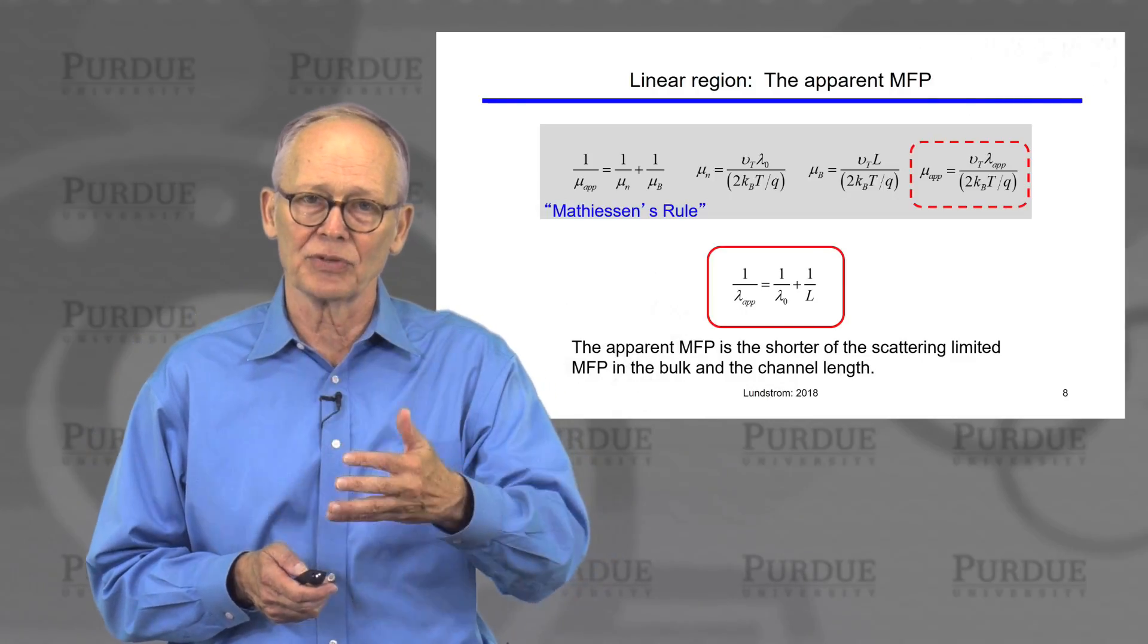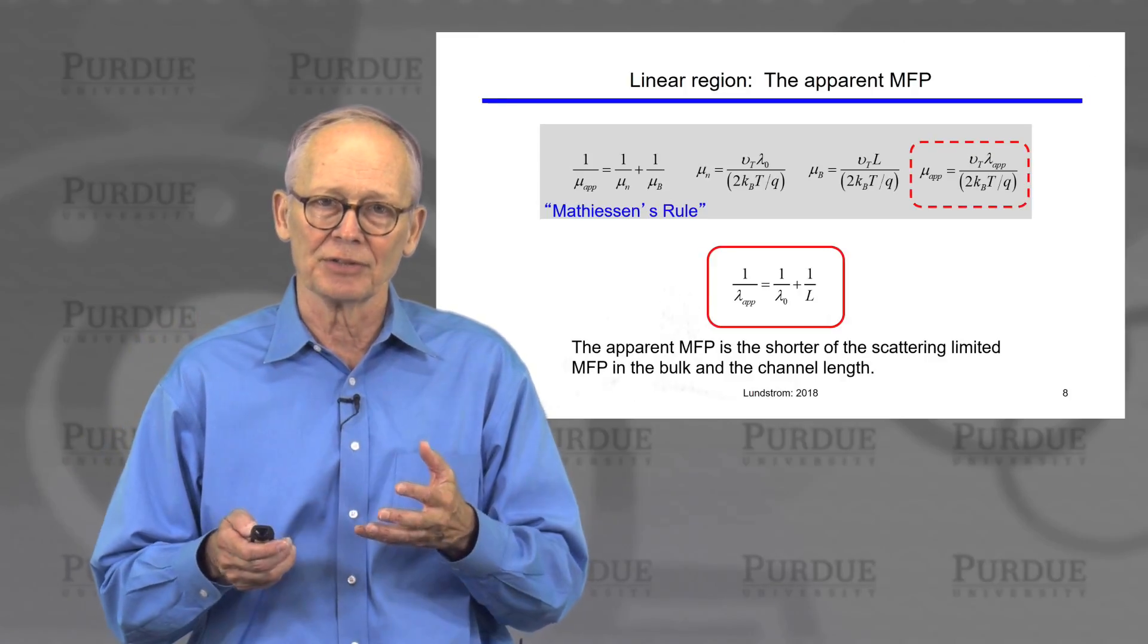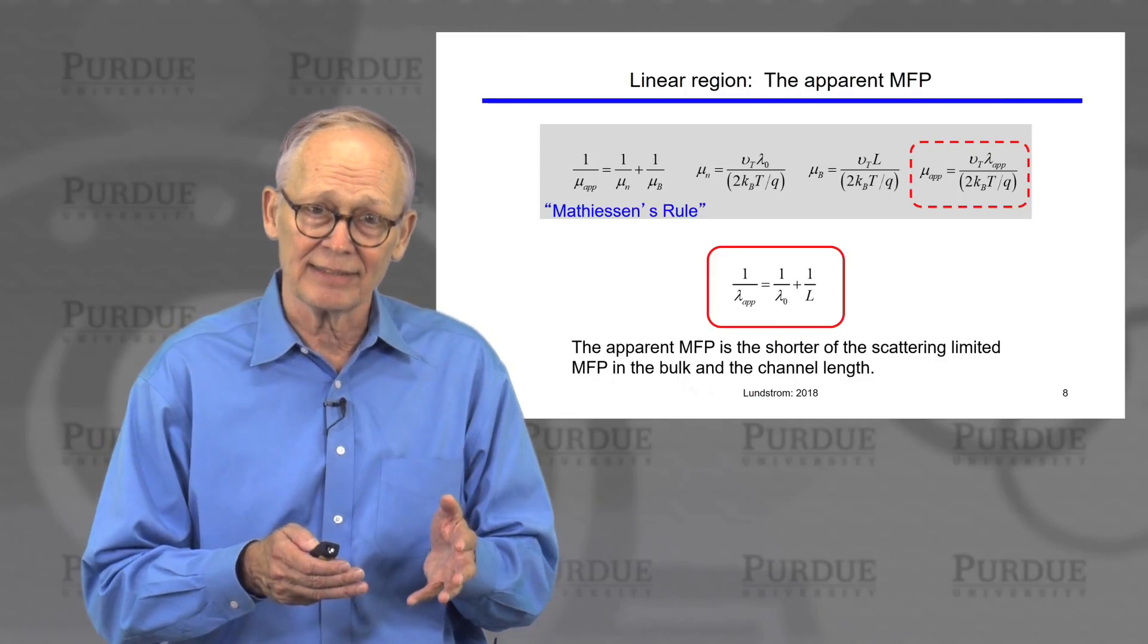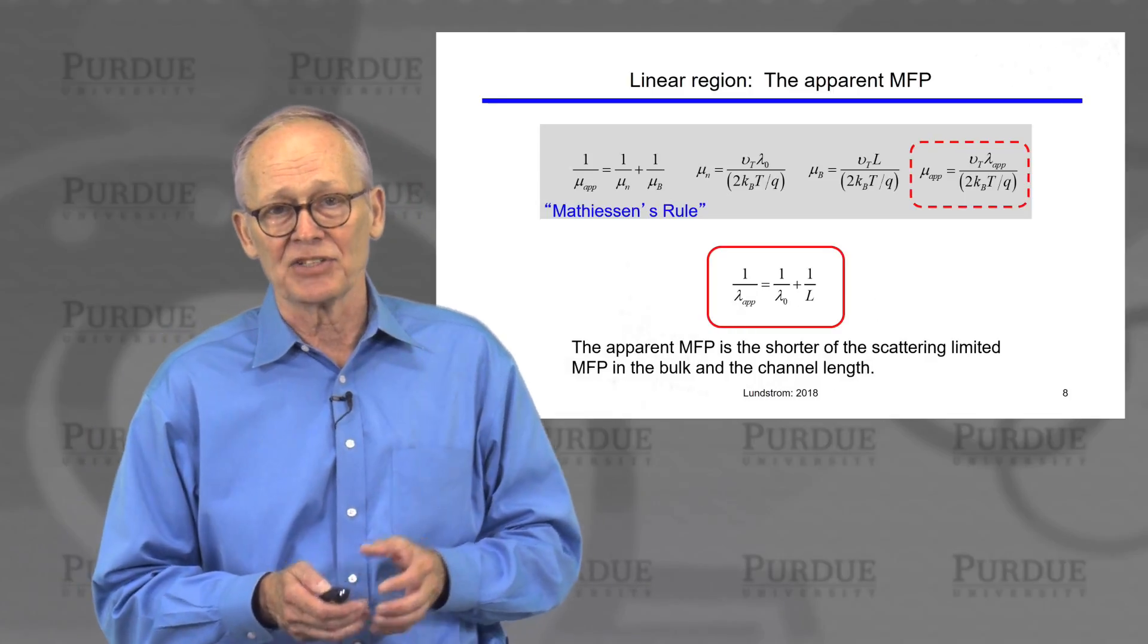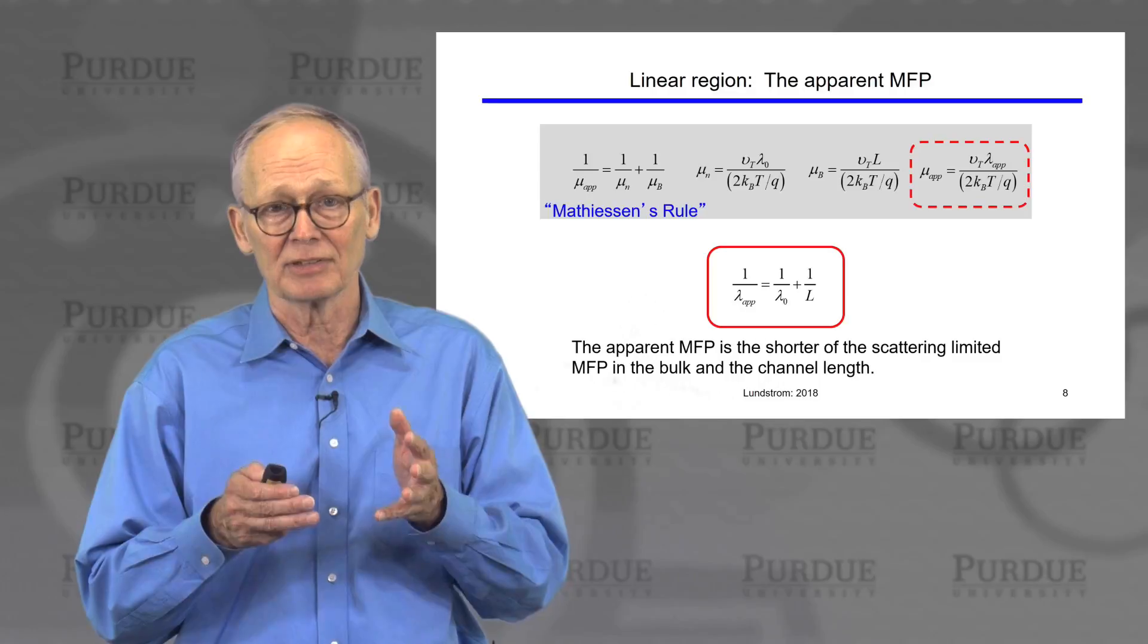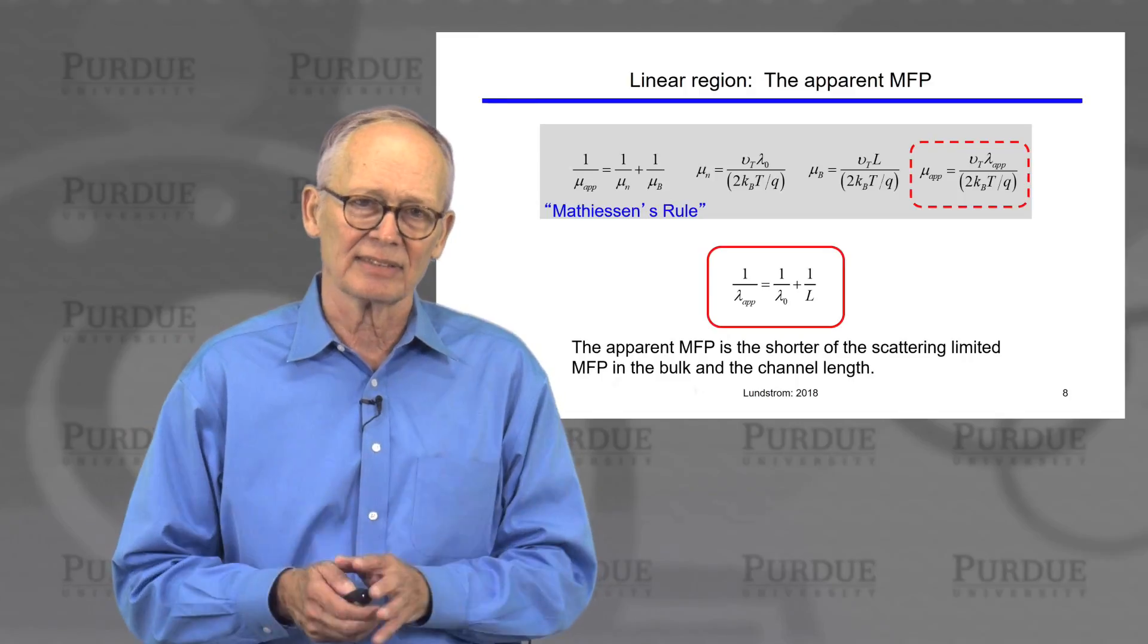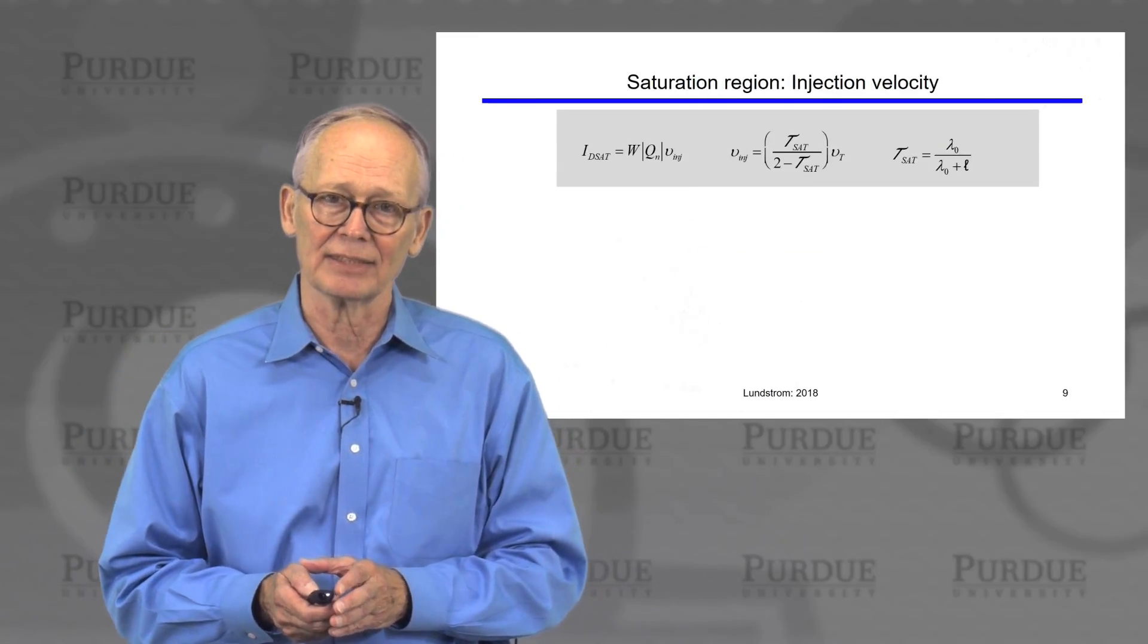An electron can never go further than the length of the channel without scattering. Whichever is shorter, if the channel length is shorter than the mean free path for backscattering in the bulk, then the channel length dominates and we're near the ballistic regime. If the channel length is very longer, then the mean free path for scattering due to scattering processes in the bulk is shorter and it dominates. So this is an intuitive way to understand what happens as channel lengths get shorter.